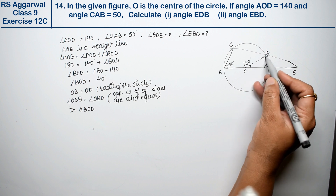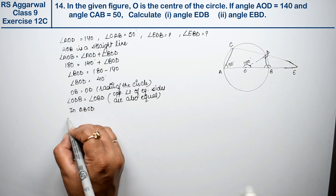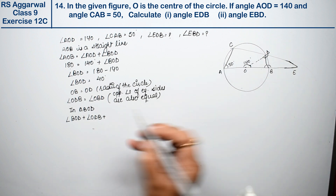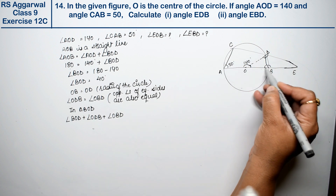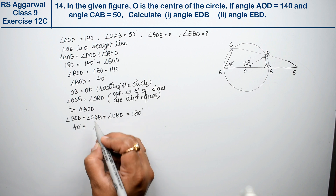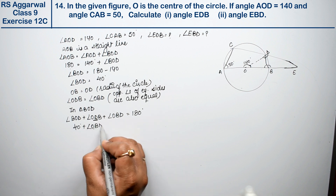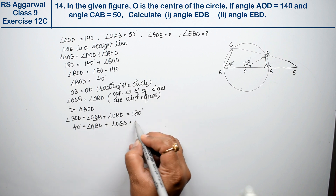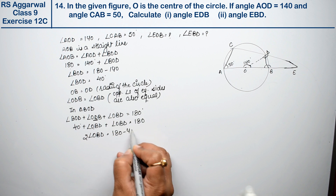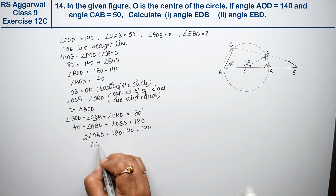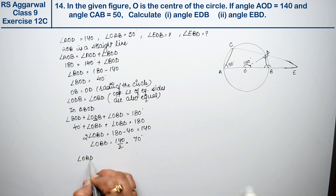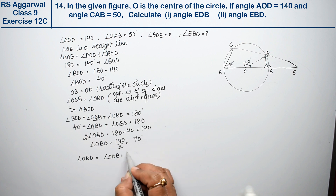In triangle BOD, the sum of all three angles is 180 degrees. So angle BOD + angle ODB + angle OBD = 180°. Since BOD = 40° and ODB = OBD, we get 40 + 2×OBD = 180, so angle OBD = angle ODB = 70 degrees.